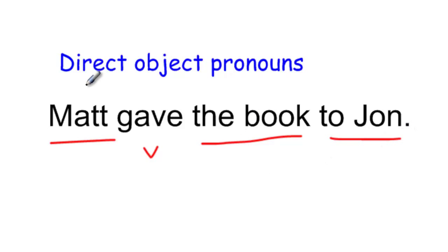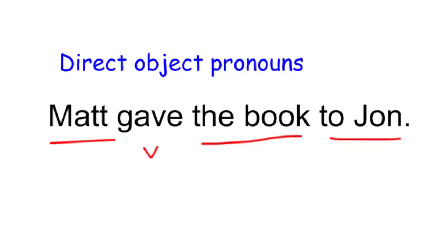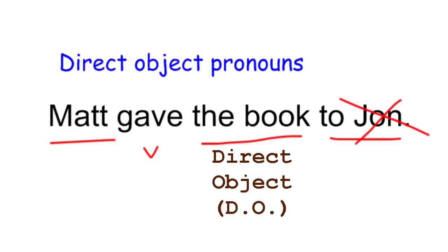Which one is directly receiving the action of the verb? Some people might say it was given to John, so John is receiving the book — but John is receiving the book, he's not receiving the action directly. An easy way to figure it out is to look at the verb 'gave' and ask yourself: what is being given? The book is what is being given, so the book is the one directly receiving the action of the verb. John, by the way, is indirectly receiving the action — but indirect object pronouns we'll deal with in another lesson. So Matt gave the book; the book is being given, it is the direct object.